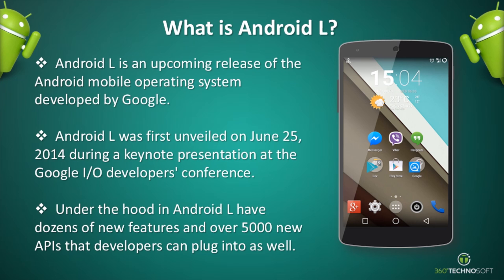Android L was first unveiled on June 25, 2014, during a keynote presentation at the Google I/O Developers Conference. Under the hood, Android L has dozens of new features and over 5,000 new APIs that developers can plug into.